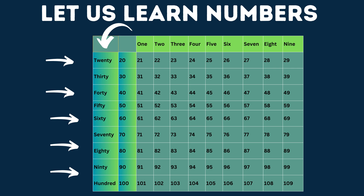Let us read the numbers. 21, 22, 23. Let us go to 90. After 90: 91, 92, 93, and then 99 and 100. After that: 101, 102, 109, 110.